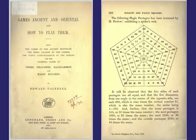It says the five sides of each pentagon are all equal, and the five diameters from one angle to the center of the opposite side are each 459, which is nine times the central number of 51. They've taken the numbers from one to 101 and arranged it in this formation that resembles a pentagon. Each layer, all the sides are equal to each other, and the diameters are all equal to the other diameters.